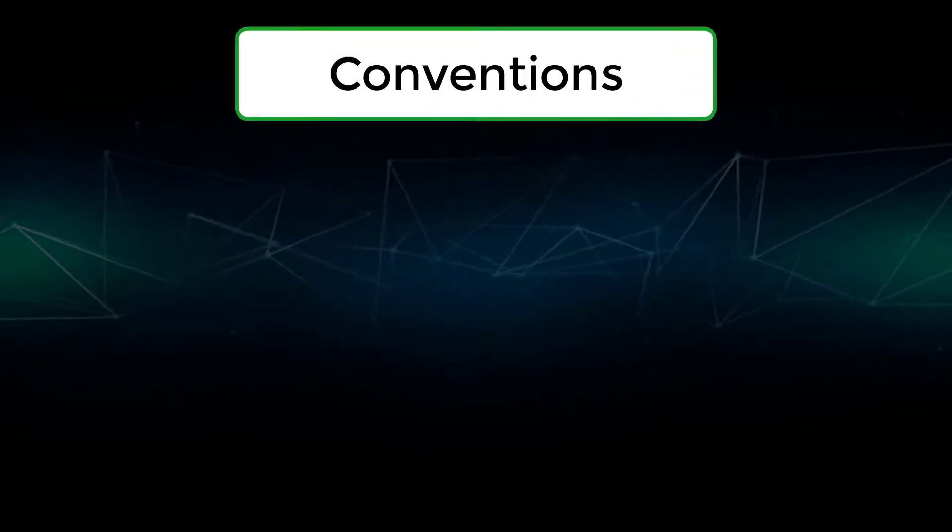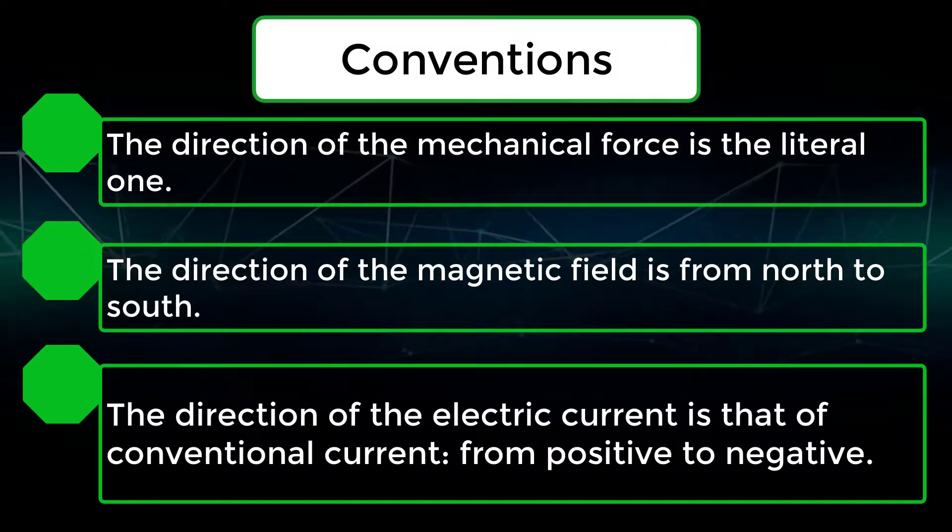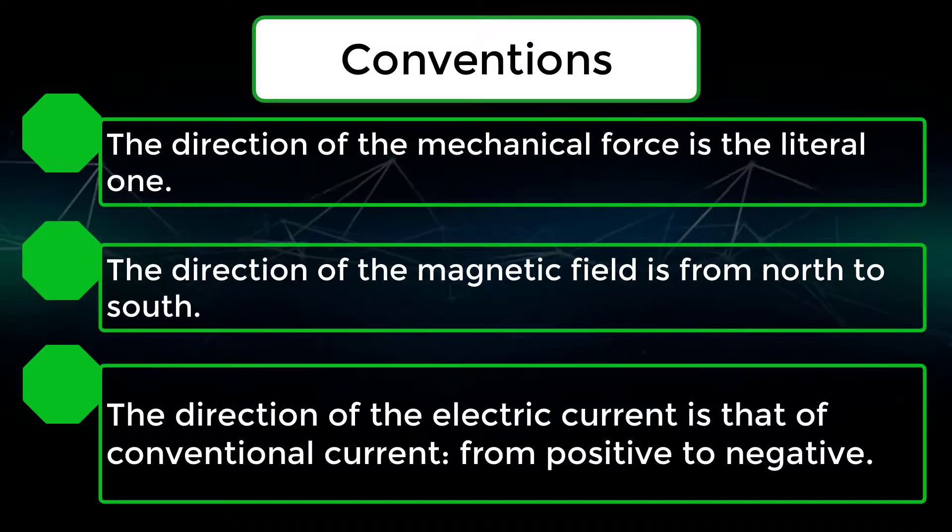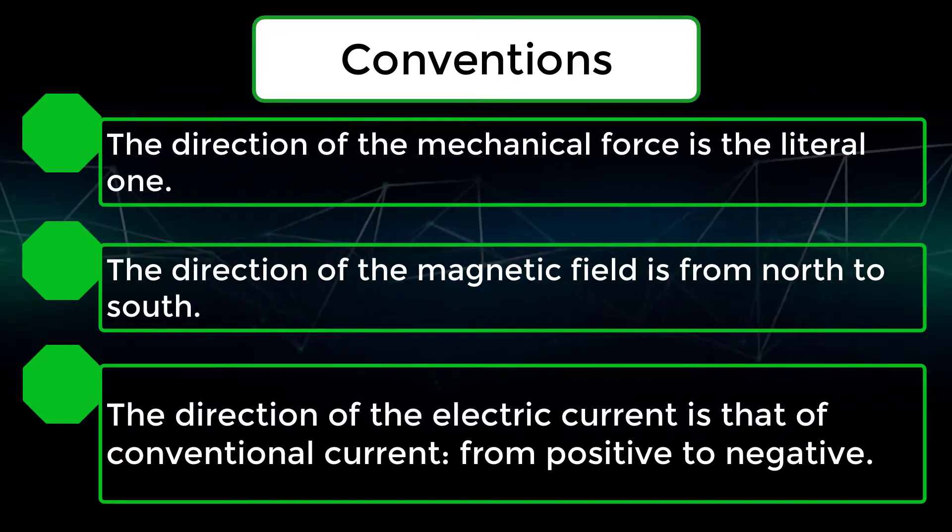Conventions. The direction of the mechanical force is the literal one. The direction of the magnetic field is from north to south. The direction of the electrical current is that of conventional current from positive to negative.